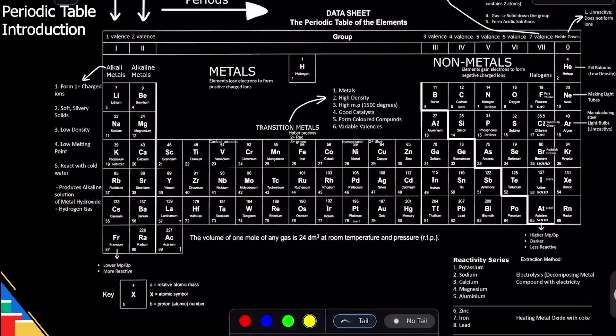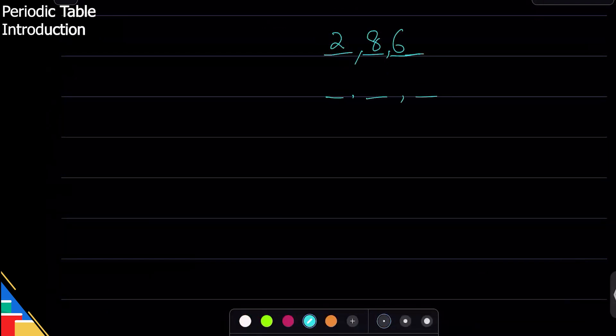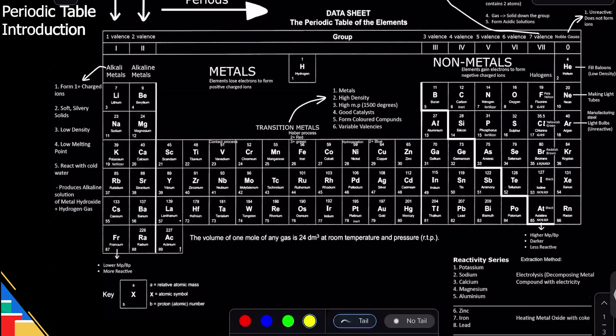Can you use the same method to tell me the configuration of aluminum? So it's in group three and row number three, so that means it has three shells and last one is three. So first one will be two, second one will be eight, and there you go. That's how we know.